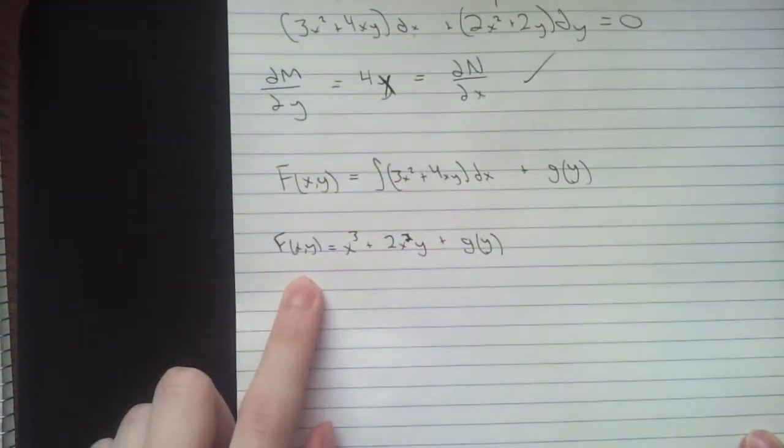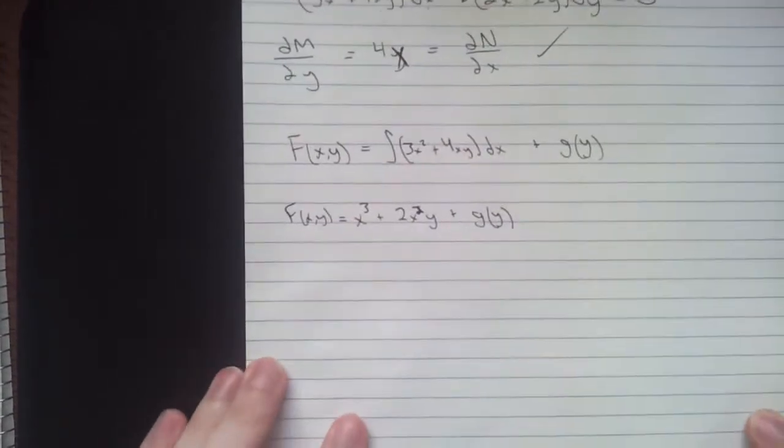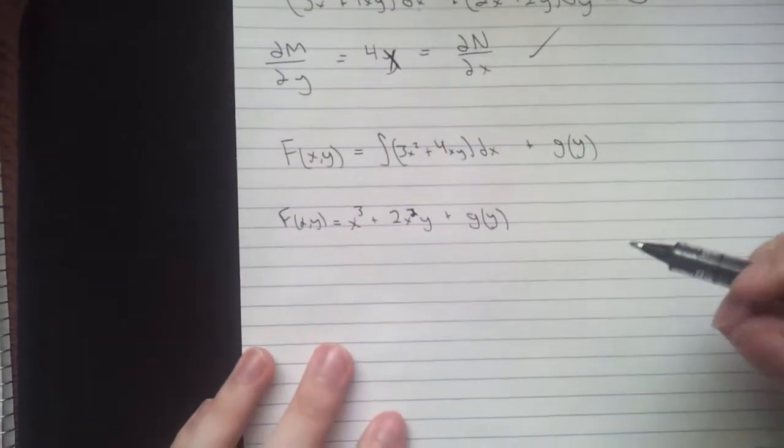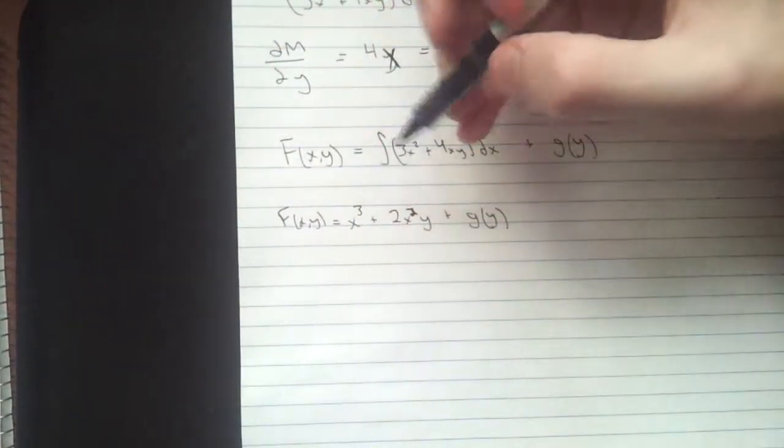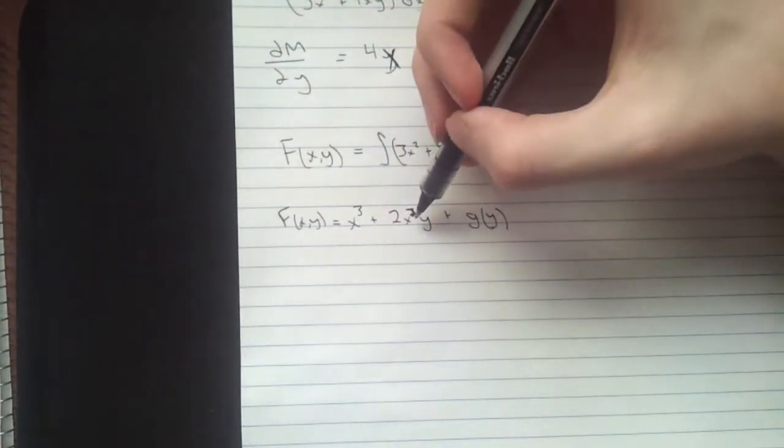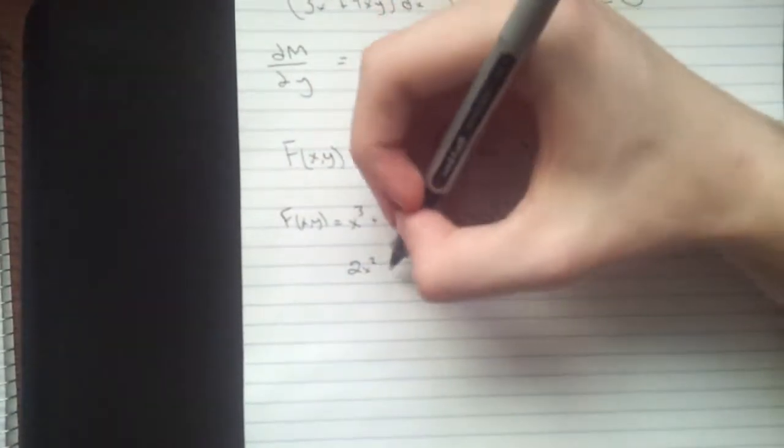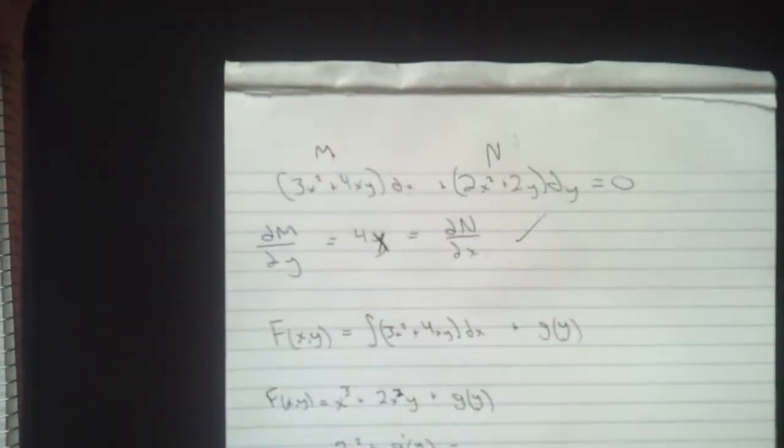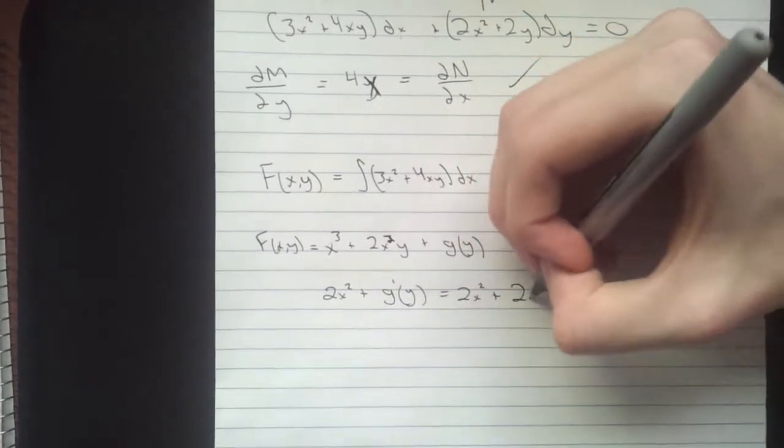So now, we're going to take this and we're going to take the derivative with respect to y and set it equal to N. So, we have derivative with respect to y gives us 2x squared plus g prime of y equals, we're just going to take N from here and just bring it right down, 2x squared plus 2y.